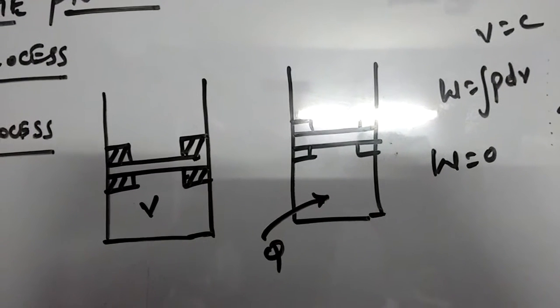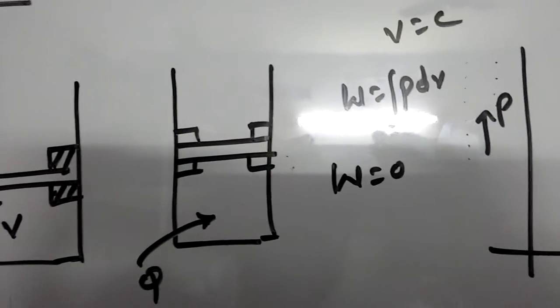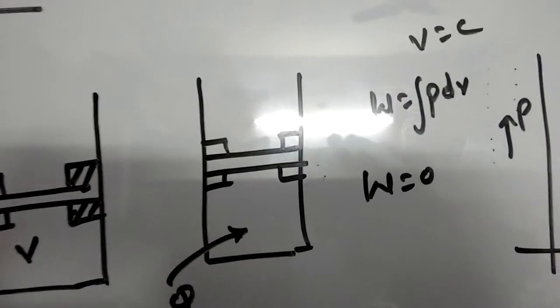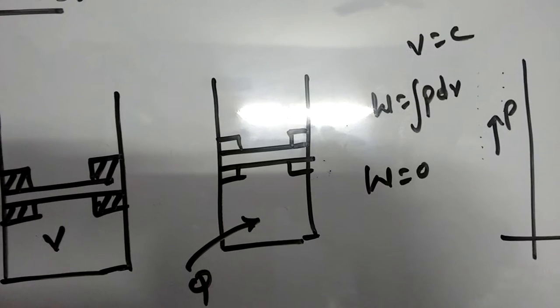There must be some increase in its pressure of the gas. From the equation of the non-flow work, W equals integral of PdV. There is no change in its volume, means obviously the work done is equals to zero.